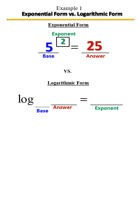To write it in logarithmic form it's going to be log base — what's our base? Yes, 5. So log base 5 of — what's our answer? 25 — equals our exponent, 2. It is read as log base 5 of 25 equals 2. To say it in exponential form: 5 squared equals 25.